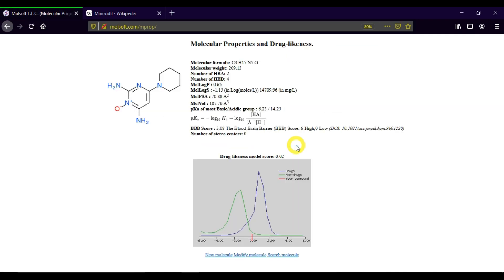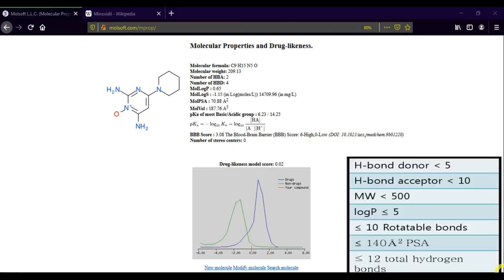The minoxidil appears on the window. Click cleanup to optimize, and then click calculate properties. Now we will get the molecular properties and drug likeness model score and its graph.